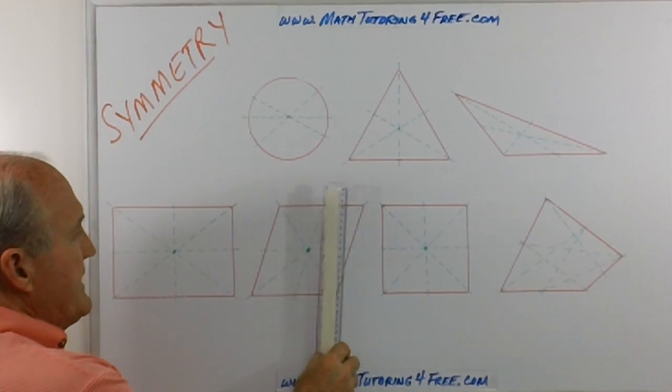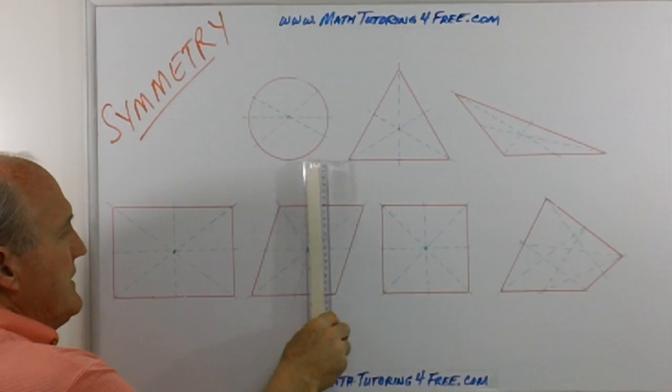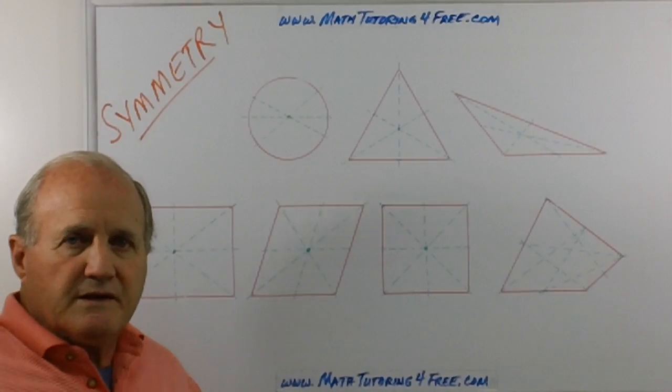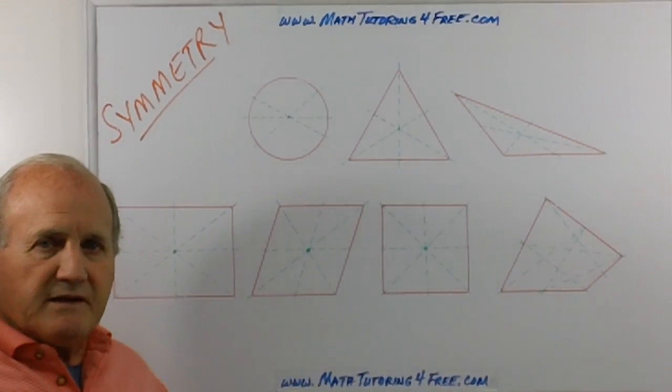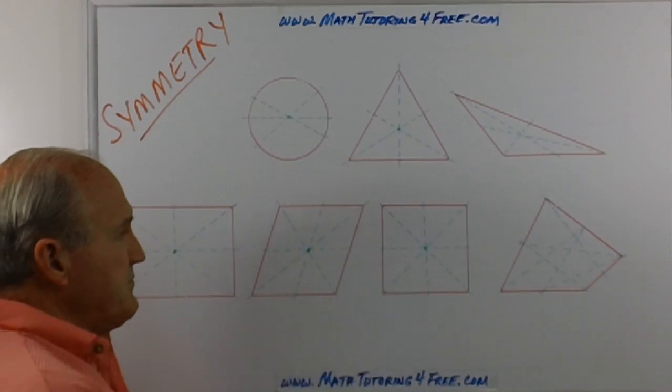Any line that you put at any angle here, as long as it goes through this point, will be cut in half by that point. So again, perfect examples of points of symmetry.